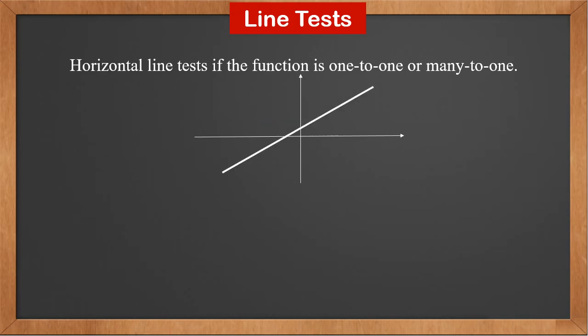Now let's look at a straight line. When a horizontal line is drawn, it hits the line at only 1 point. Therefore, it's a 1 to 1 function.